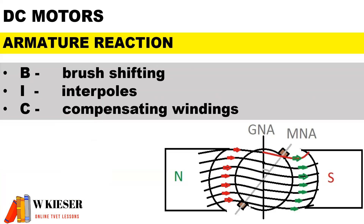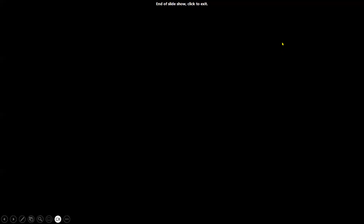To overcome the effects of commutation and armature reaction, we can utilize brush shifting, interpoles, and compensating windings. Thanks for watching this video!